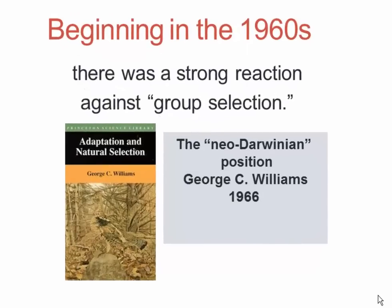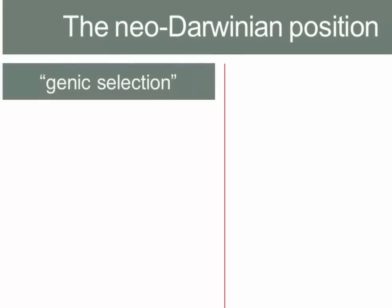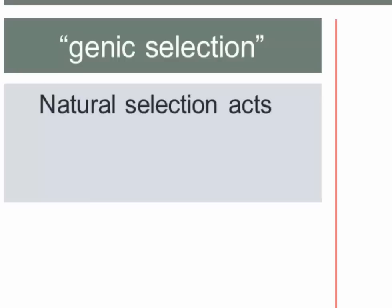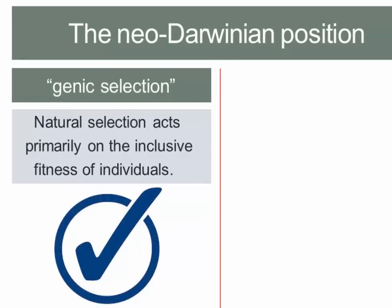Among other things in this book, Williams developed an extensive critique of group selection that came to define the very meaning of neo-Darwinian. The neo-Darwinian position centers on what he called genic selection — the idea that natural selection acts primarily on the inclusive fitness of individuals. Williams built on the work of Hamilton and argued that selection operates to favor genes that give advantage to individuals measured in terms of their inclusive fitness.